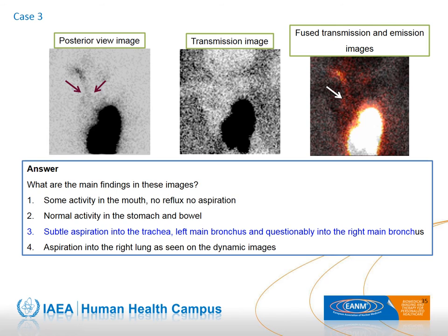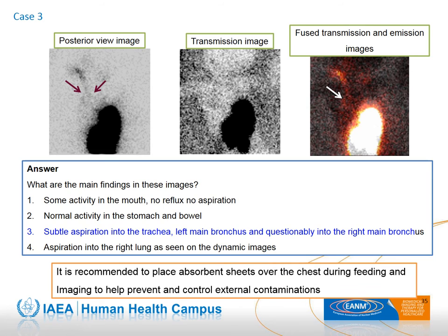External contamination in milk scans can occur during feeding and during imaging secondary to vomiting and regurgitation. It is recommended to place absorbent sheets over the chest both during feeding and during imaging to help prevent and control contamination.